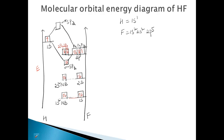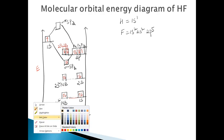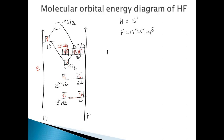The electronic configuration of HF can be written as: 1S2, 2S2 (non-bonding), sigma SPZ2 (bonding molecular orbital), 2PX2, and 2PY2 (non-bonding).